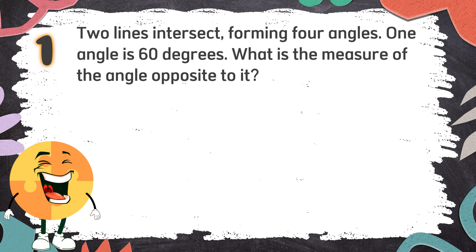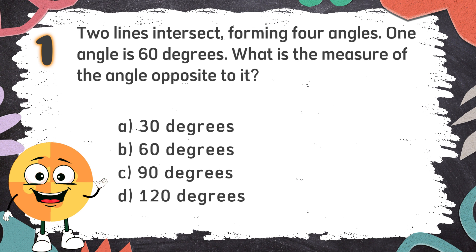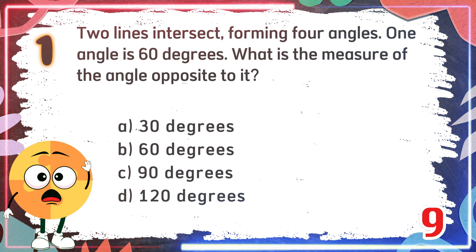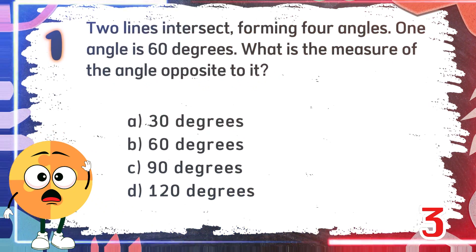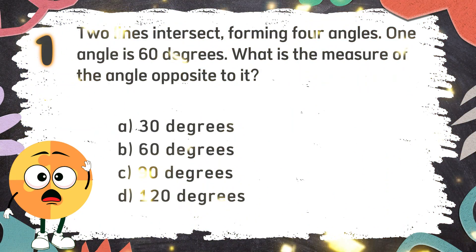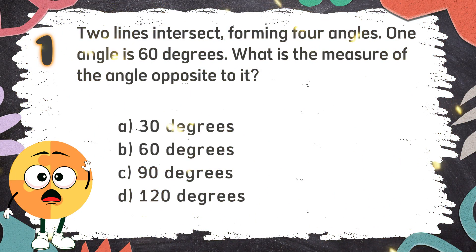Number 1: Two lines intersect, forming four angles. One angle is 60 degrees. What is the measure of the angle opposite to it? The choices are: A. 30 degrees, B. 60 degrees, C. 90 degrees, D. 120 degrees. The correct answer is B. 60 degrees.